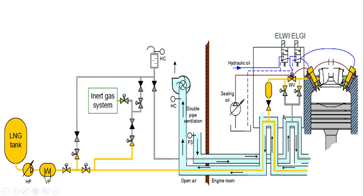In my last video I told you about four safeties. The first safety is that a gas leak detector is provided in the injection valve. The second safety is that a hydrocarbon sensor is provided in the duct system in the engine room space. The third safety is that most of the fuel gas system is provided outside the engine room. Along with that, the fourth safety is the sealing oil, which prevents contamination of hydraulic oil with gas and also prevents gas leakage.